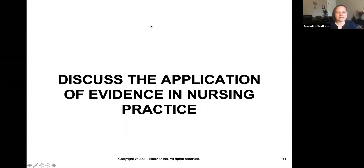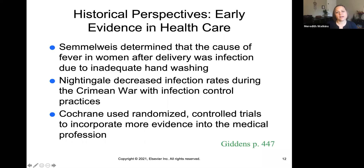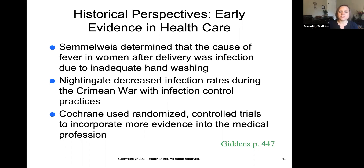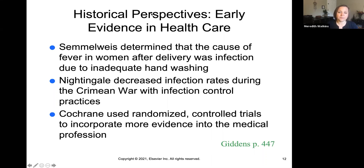Why does research and evidence matter to nursing? Looking at history, Florence Nightingale decreased infection rates in the Crimean War with infection control practices. Semmelweis noted that patients had less fevers after giving birth because of handwashing. And Cochrane — whose name we now associate with high-level journal research — first used randomized control trials to incorporate more evidence in the medical profession. Early on, we see glimpses of evidence being applied in health care, and the ultimate result was that patients had better outcomes.